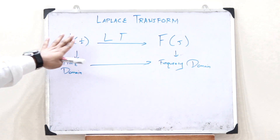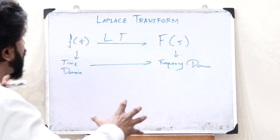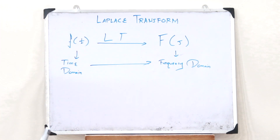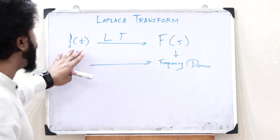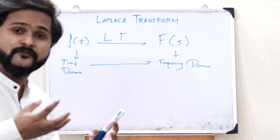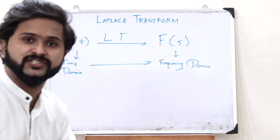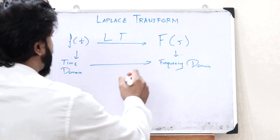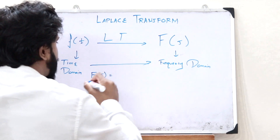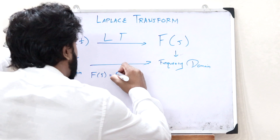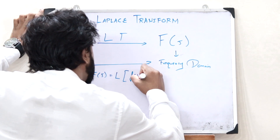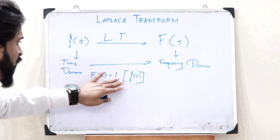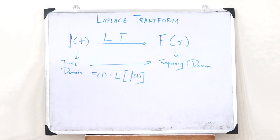A Laplace Transform converts a particular function from the time domain to the frequency domain. To convert a particular function from the time domain to the frequency domain, we have a particular expression for the Laplace Transform. F of S is given as the Laplace Transform of f of t, and it can be written as L of f of t. This is how we denote that we are obtaining F of S as the Laplace Transform of this particular function in the time domain.